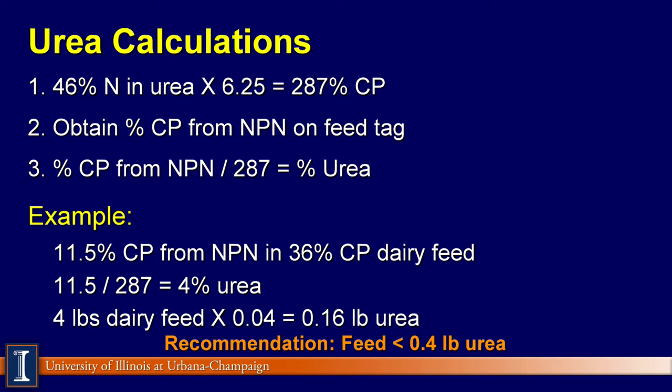For example, if there is 11.5% non-protein nitrogen in a 36% crude protein dairy feed, divide the 11.5% non-protein nitrogen by 287. This 36% crude protein dairy feed contains 4% urea. If 4 pounds of this feed is fed to each cow daily and it contains 4% urea, then each cow will consume 0.16 pounds of urea.